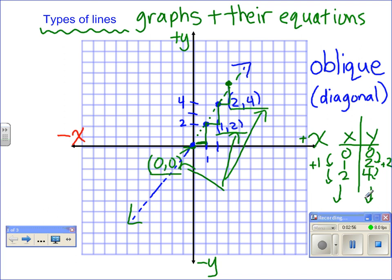If we were going to write an equation for this oblique line, we would say that every time we go from the x to the y, we multiply by 2. So y is equal to 2x.